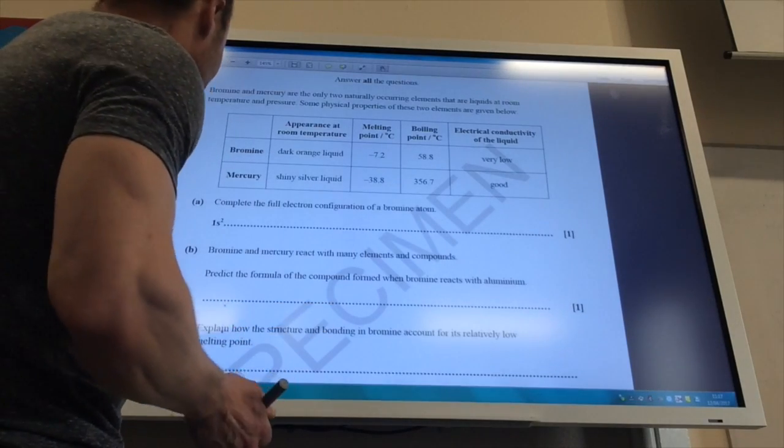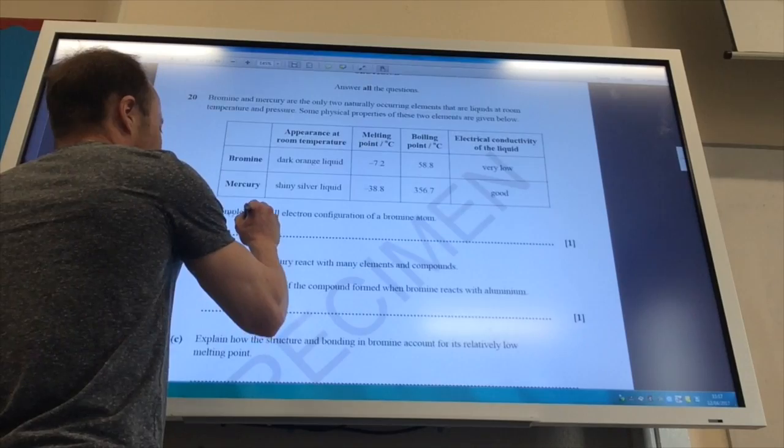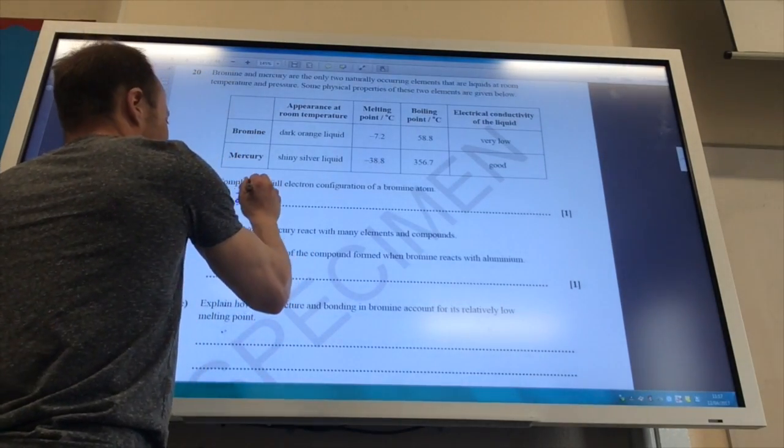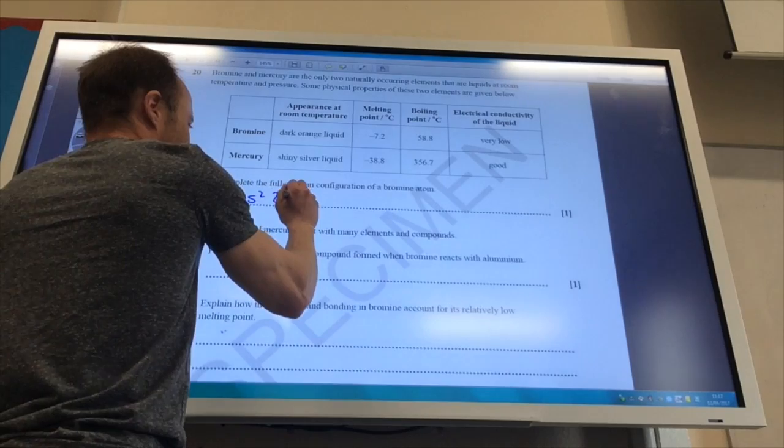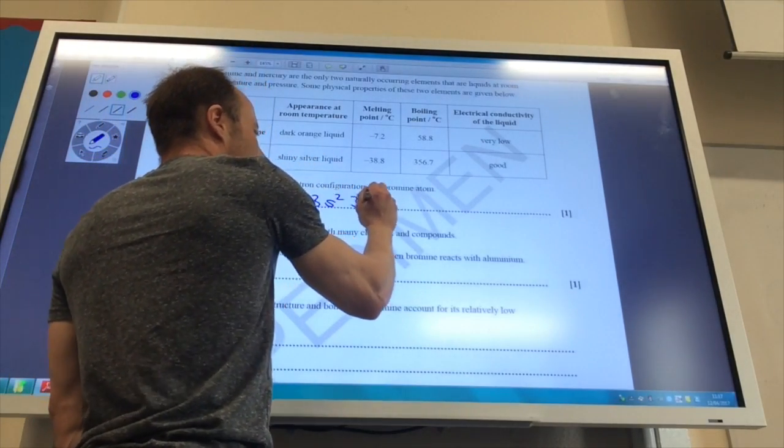So bromine has got 35 electrons if you look at the periodic table. So 1s2 and it's going to be 2s2, 2p6, then of course we go to 3s2, 3p6.